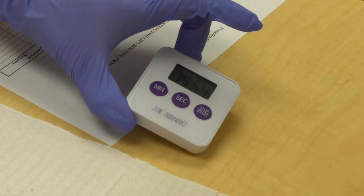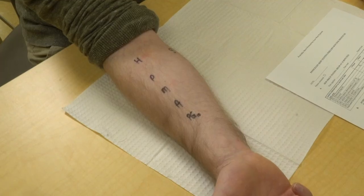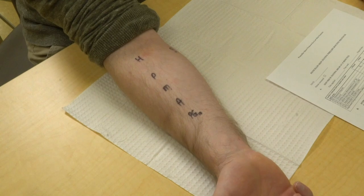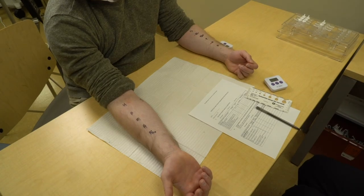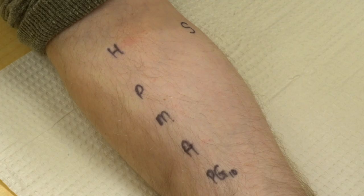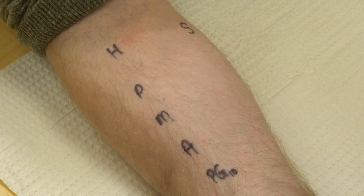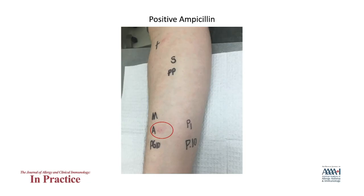After all the tests are placed, wait 15 minutes for the reading. Please let your patient know that there will be itching and redness at the site of the histamine control, but that no scratching is allowed. If all of the skin prick reagents are negative, then it is time to move on to the intradermal step.